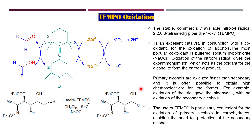Primary alcohols are oxidized faster than secondary alcohols, and it is often possible to obtain high chemoselectivity for the primary alcohol. For example, in the oxidation of a triol, the secondary alcoholic groups and the primary alcoholic group are both present. Selectively, only the primary alcohol is oxidized to give the aldehyde, while the secondary alcoholic groups remain untouched.